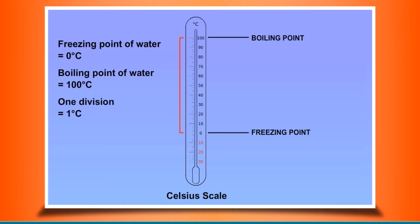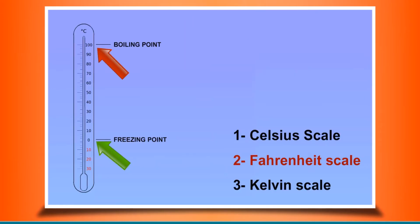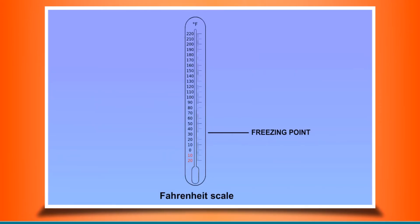Fahrenheit scale: In this scale, the freezing point of water is taken as 32 degree Fahrenheit and boiling point is fixed at 212 degree Fahrenheit, and the range is divided into 180 equal divisions. The Celsius and Fahrenheit scale meet at minus 40 degree. This means minus 40 degree Celsius is equal to minus 40 degree Fahrenheit.